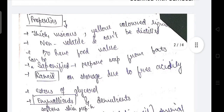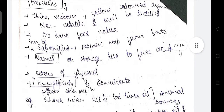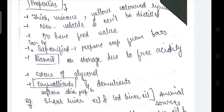Properties of fixed oils: they are thick, viscous, yellow-colored liquids, non-volatile and cannot be distilled, have food value, can be saponified, are prepared from fats, become rancid on storage due to free acidity, are esters of glycerol, and possess emollient and demulcent properties that soften the skin.